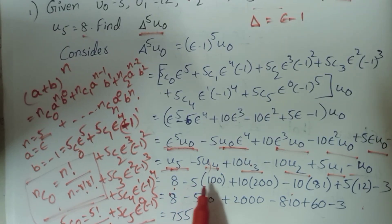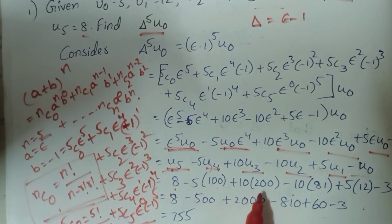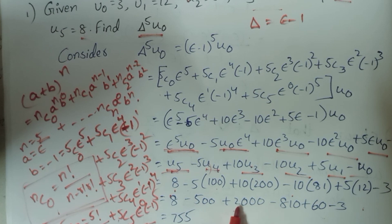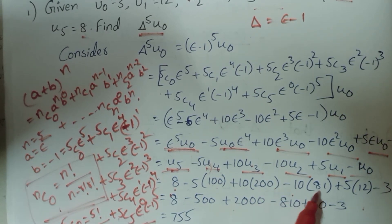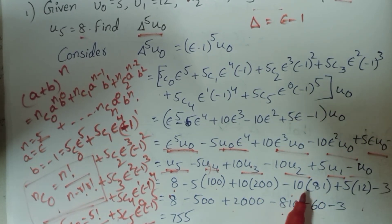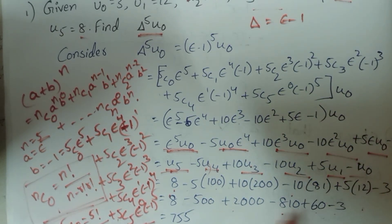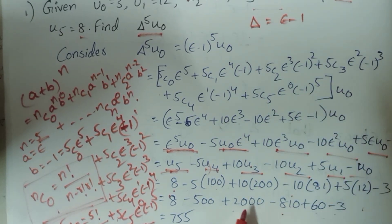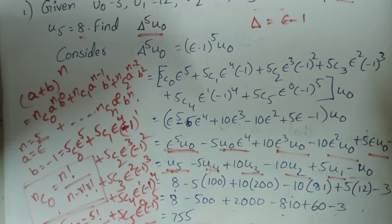So: 8 minus 5 into 100 equals minus 500, plus 10 into 200 equals plus 2000, minus 10 into 81 equals minus 810, plus 5 into 12 equals 60, minus 3. The final answer is 8 minus 500 plus 2000 minus 810 plus 60 minus 3, giving the value.